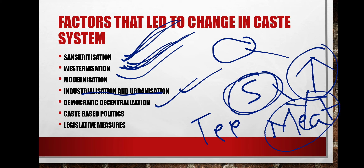Democratic decentralization has also led to change — reservations are provided to SCs and STs in the Panchayati Raj system, enabling wider citizen participation in the political field. Caste-based politics is another factor: low-caste people participate in politics, win elections, frame policies, and work toward the development of lower-caste people. Legislative measures and commissions like the NCSC and NCHT work for the development of lower-caste and Harijan people in Indian society.